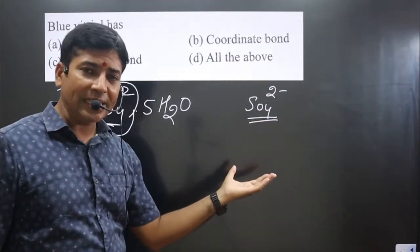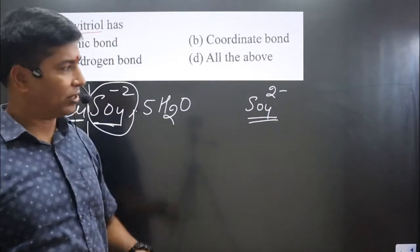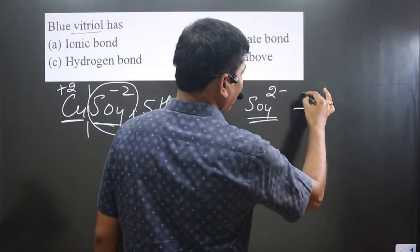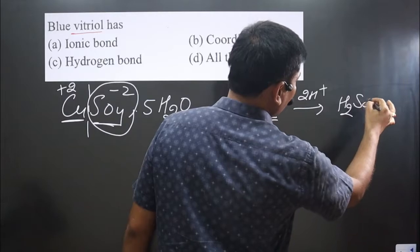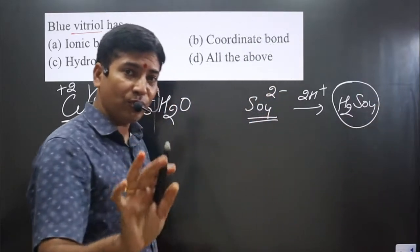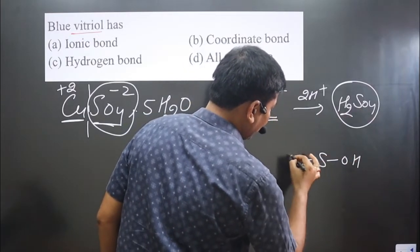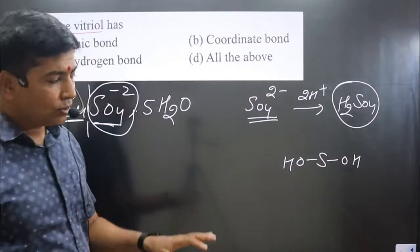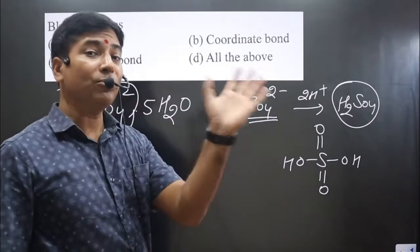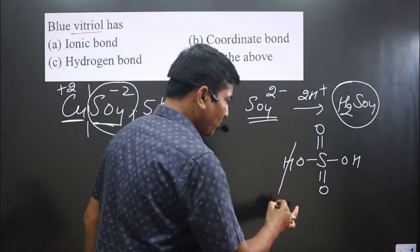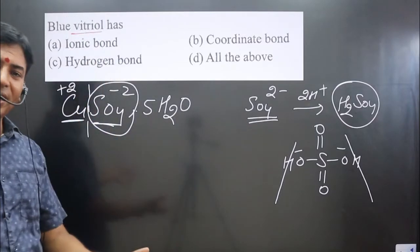Each hydrogen carries one plus charge, so attaching two H⁺ gives us H₂SO₄. Now take the central sulfur element and make OH pairs — we get two OH pairs. Attach the remaining two oxygens via double bonds. Then remove both hydrogens: removing each H⁺ restores one negative charge, giving us the complete structure of the sulfate ion SO₄²⁻.